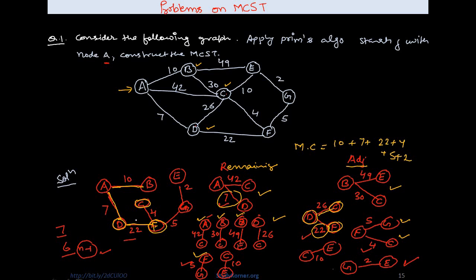Since C is the new adjacent node, I find the neighbors of C in the graph: B, E, F, D, and A. Among these, A, B, D, and F are already considered, so the only remaining node is E. I add edge C to E to the adjacent set — C to E is the only new edge included at this iteration.